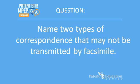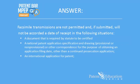Name two types of correspondence that may not be transmitted by facsimile. As shown in Chapter 500, facsimile transmissions are not permitted and, if submitted, will not be accorded a date of receipt in the following situations. First, a document that is required by statute to be certified.